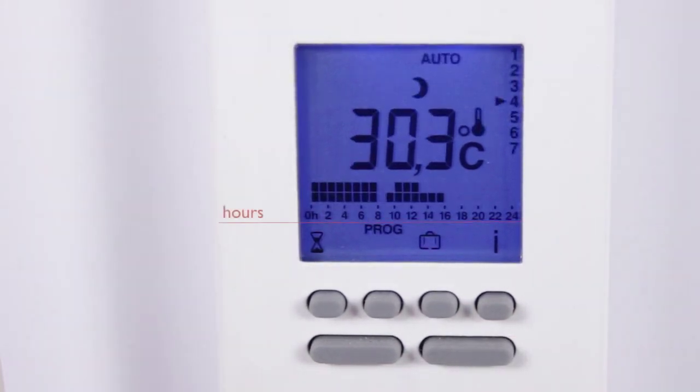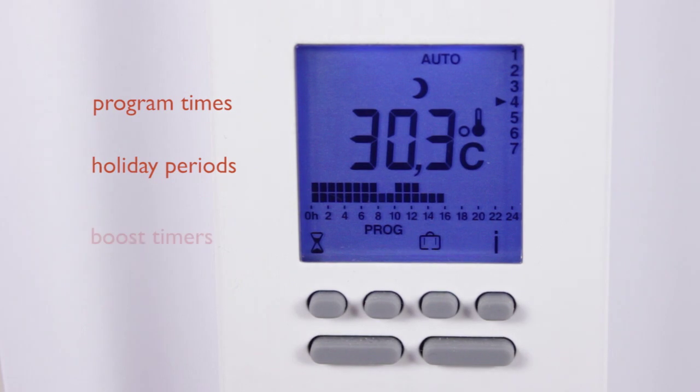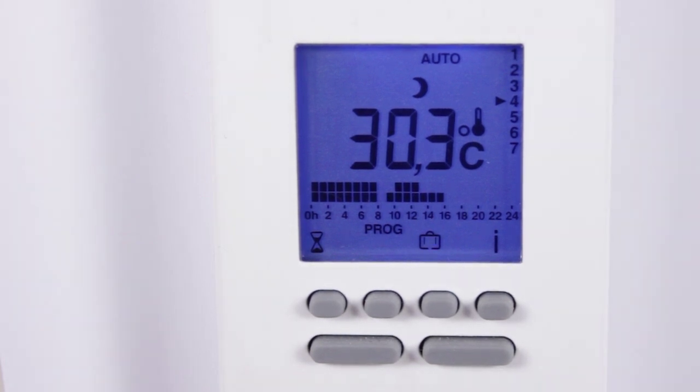When you're in this screen, the numbers along the bottom of the display represent the hours in a day, and the numbers at the side of the display represent the days of the week. You have some options to set the program times, holiday periods, and boost timers, so you can now easily see and plan your heating usage daily.